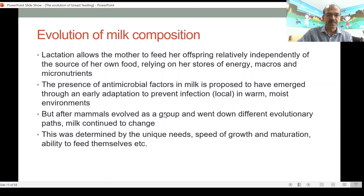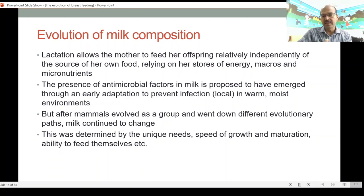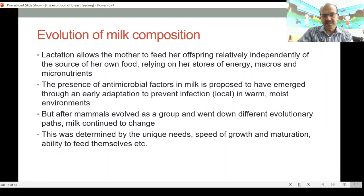After mammals evolved and went down different evolutionary paths, milk continued to change, reflecting the unique needs, speed of growth, maturation, and duration of breastfeeding for each species. Cow's milk and camel milk, for example, have much higher amounts of protein and fat compared to human milk. That is why in the first year of life these milks are not suitable — the load on the kidneys and digestive system is much higher, and there is a higher risk of gut bleeding and anemia due to high protein intake.